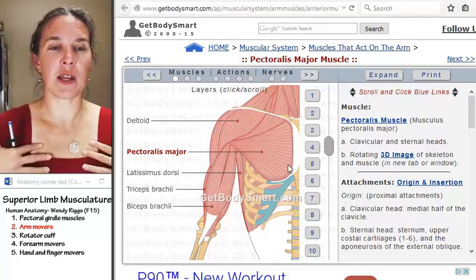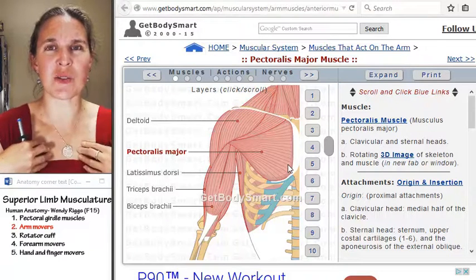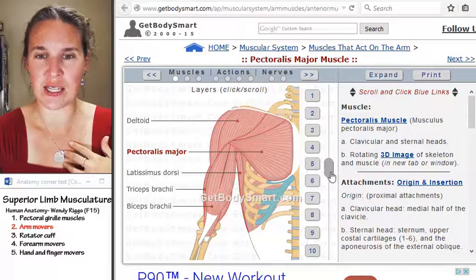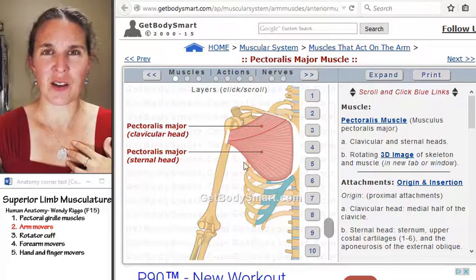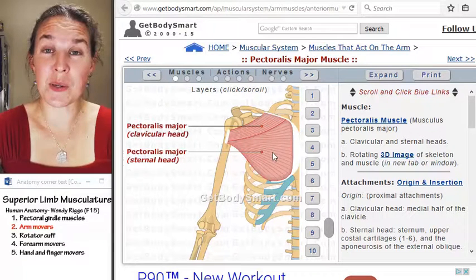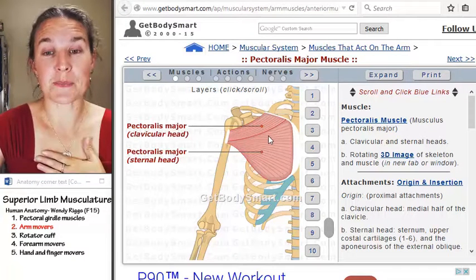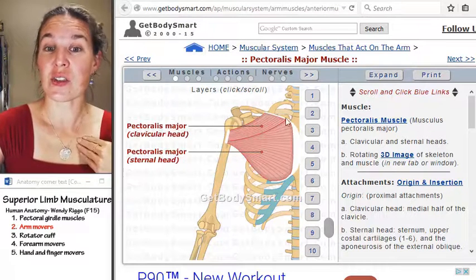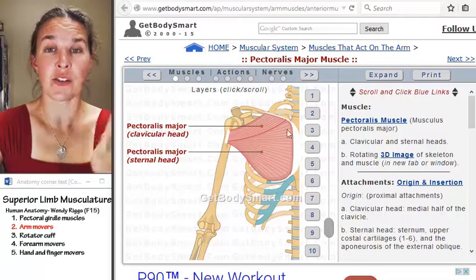Pec major is the giant one. Palpate your pec majors. Nice. And you know pec major is going to attach where? Where would you expect? It actually attaches to the sternum. And let's get rid of some of this extra stuff so that we can just see pec major. Notice that we attach not just to the sternum. We also attach to the clavicle.